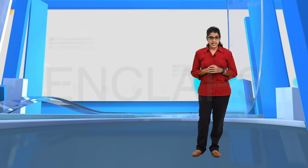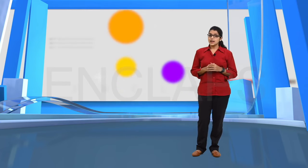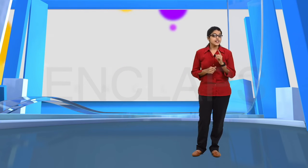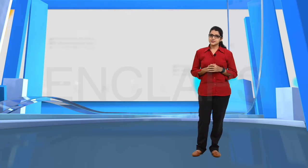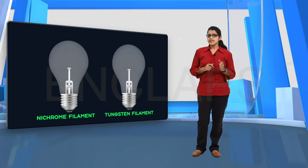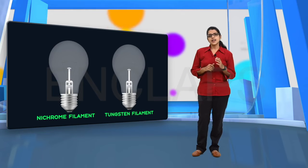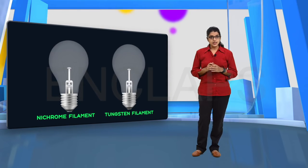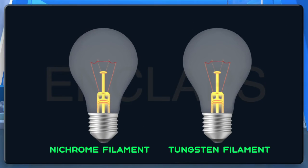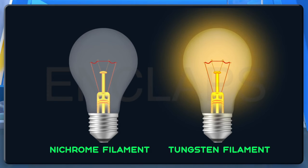We have learned about the incandescent lamp. So, why not use nichrome in a bulb as a filament? We know that nichrome and tungsten both have high resistivity and high melting point. However, nichrome can appear to be in a red hot state but does not have the ability to emit white light. Tungsten, on the other hand, can last long in a red hot state and emit white light. That is why nichrome filament is not used in a lamp — tungsten is used instead.